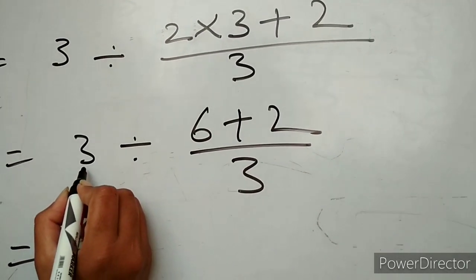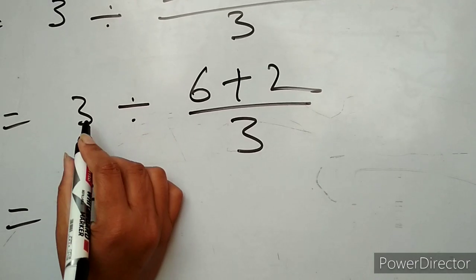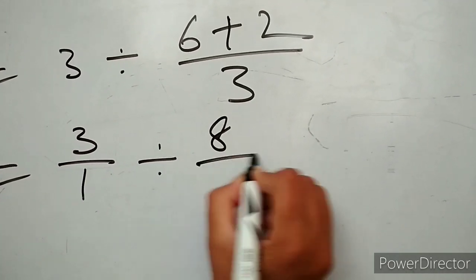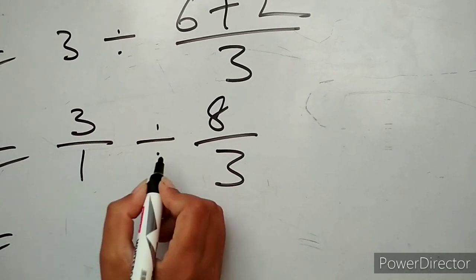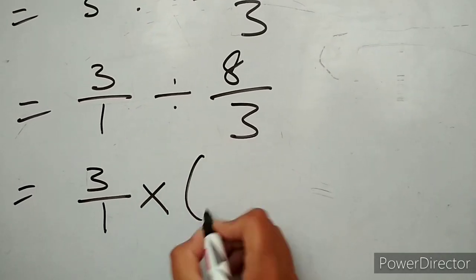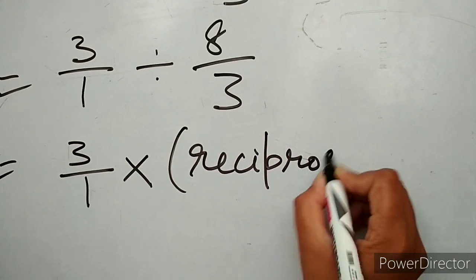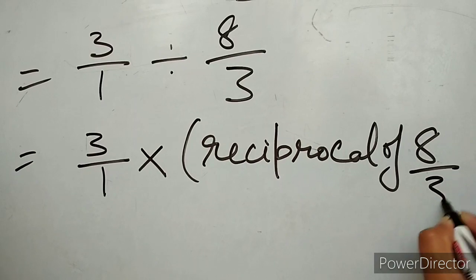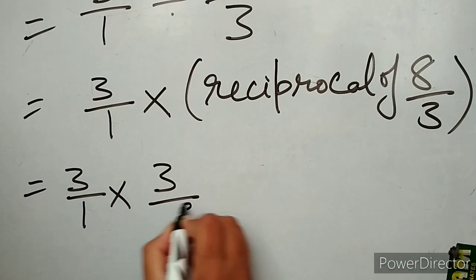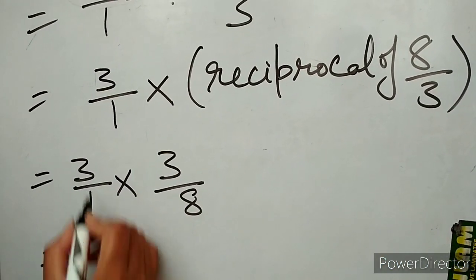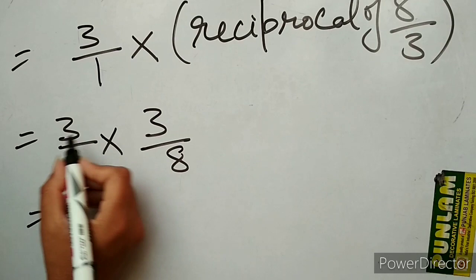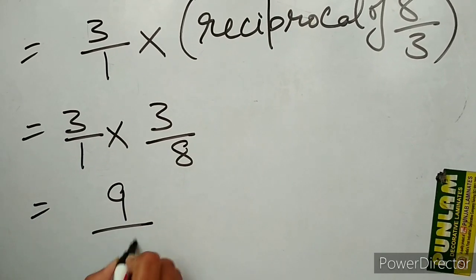3 is a whole number so we convert it into a fraction by writing 1 in its denominator, giving 3 upon 1. Then divide by 6 plus 2, which is 8 upon 3. So we have 3 upon 1 divided by 8 upon 3. We simply multiply by the reciprocal of 8 upon 3, which is 3 upon 8. Multiply numerator by numerator and denominator by denominator: 3 multiplied by 3 gives 9, and 1 multiplied by 8 gives 8. The answer is 9 upon 8.